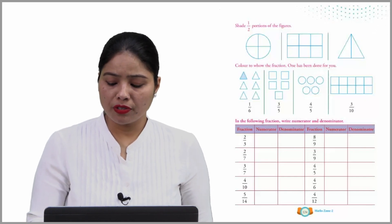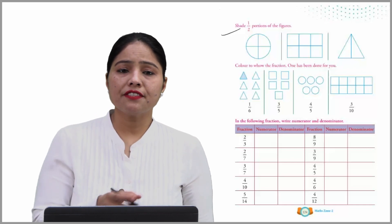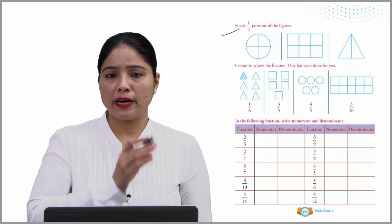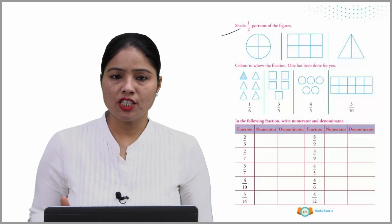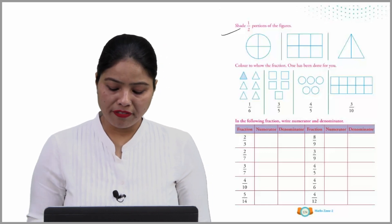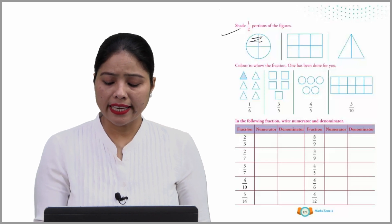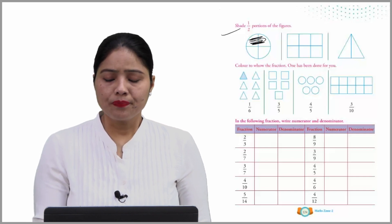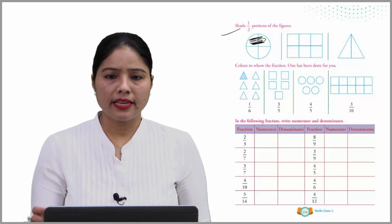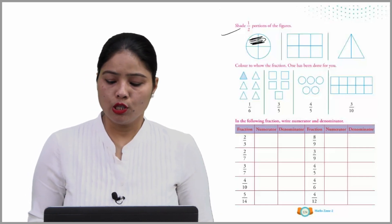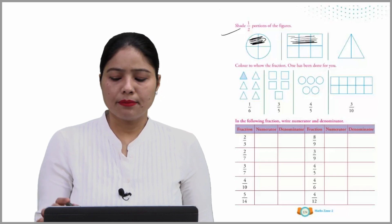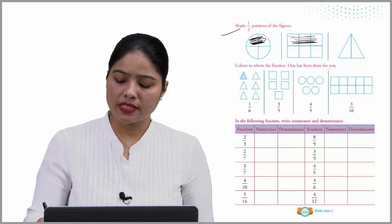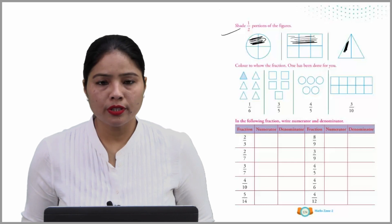Shade half portion of the figure. अब हमें इस figure का जो दे रखा है, इसका half part को shade करना है. So, we can see that ये circle है — इसके चार parts हैं. तो अगर मुझे इसको half करना होगा, तो मैं इसके half part को shaded कर दूंगी like this. And second one — ये हमारे six boxes हैं and they are all equal, so we just shade half portion like that. Similarly, ये triangle है, तो हम इसके एक part को shaded कर देंगे. I hope you understood.